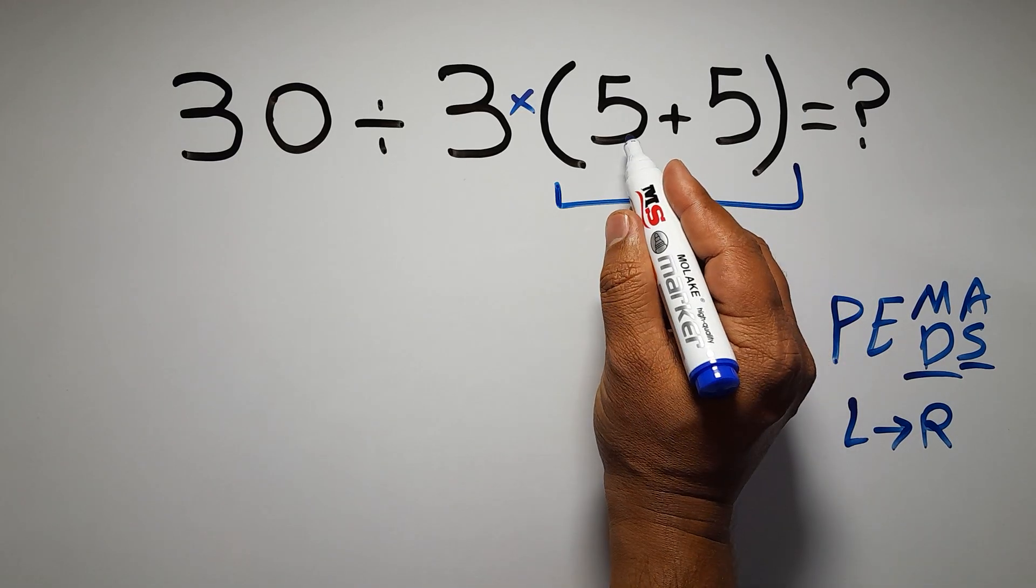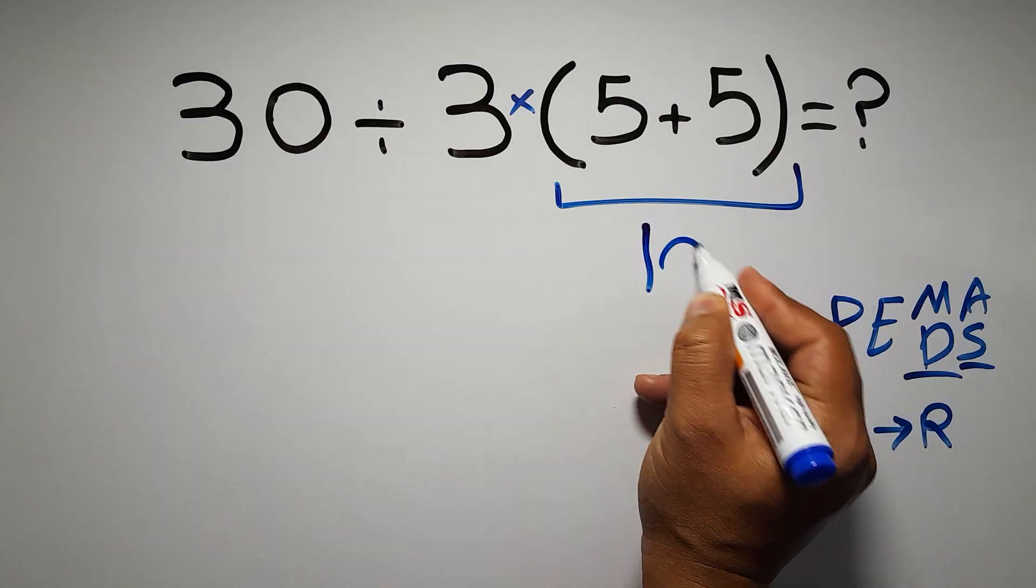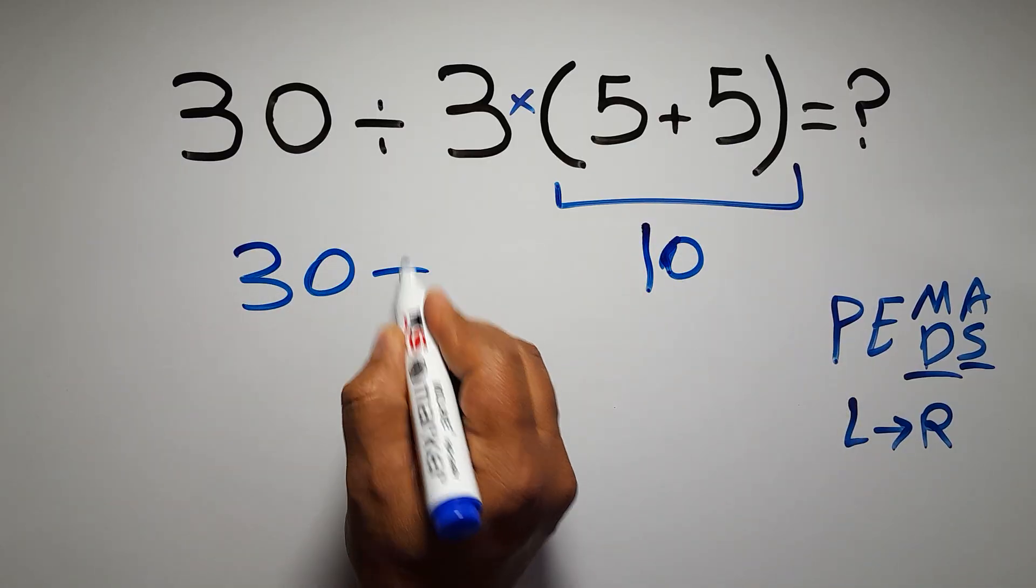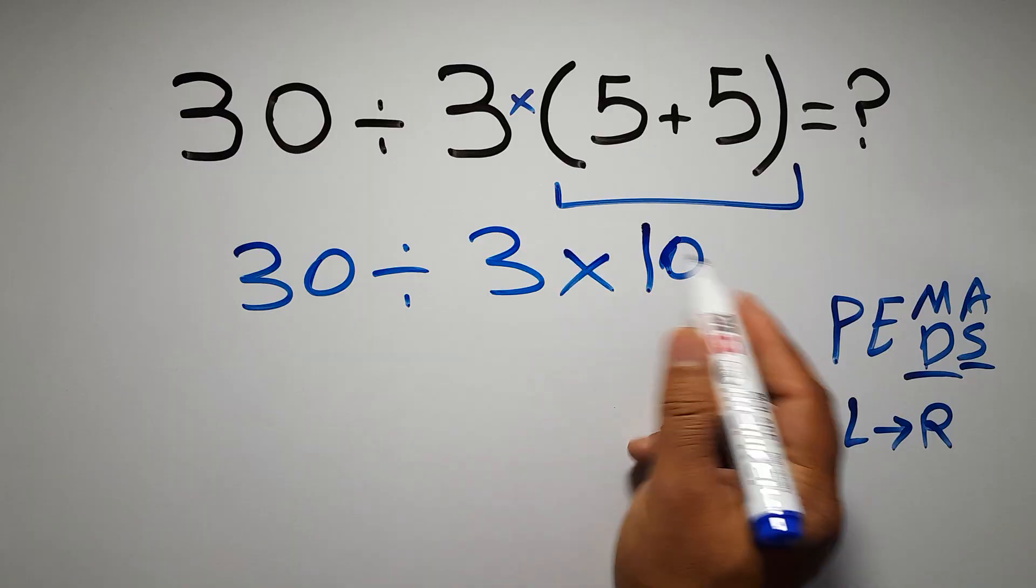Inside this parentheses we have 5 plus 5 which equals 10, so 30 divided by 3 times 10.